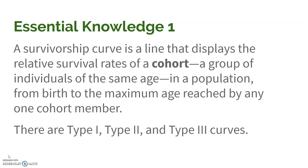We do this by looking at a cohort — a group of individuals of the same age. We start studying them when they're all born and track them through their lifespan. With every time frame that goes by, we check how many are still alive. We can put all that data together to generate either a type 1, a type 2, or a type 3 curve.